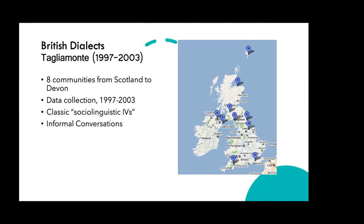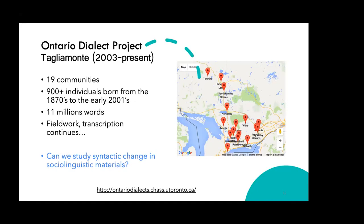Let me introduce two corpora of vernacular speech. The first is the British dialects data that I and my students collected when I was at the University of York in England. The archive represents eight communities from my own research and several others, which I've worked on in collaboration with Jennifer Smith at the University of Glasgow. The data come from informal conversations and oral histories from people born and raised in these communities. The second repository is the Ontario Dialects Project, a long-term documentation project comprising samples from 20 small towns and counting, across the broad expanse of Ontario, Canada. These data represent about 11 million words collected through on-the-ground fieldwork and lengthy recordings of people born and raised in these places.